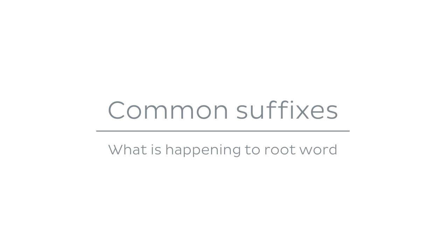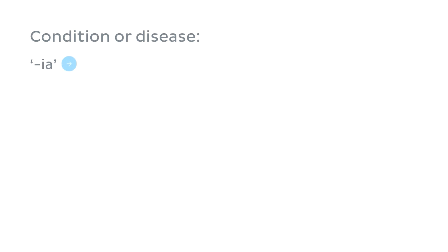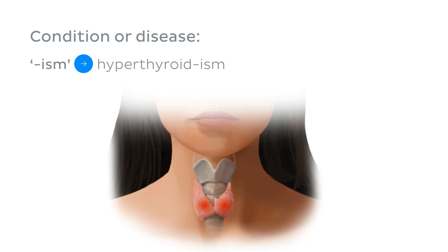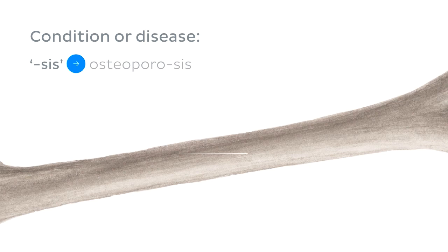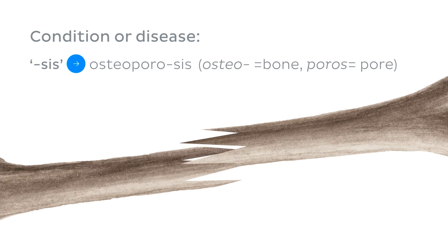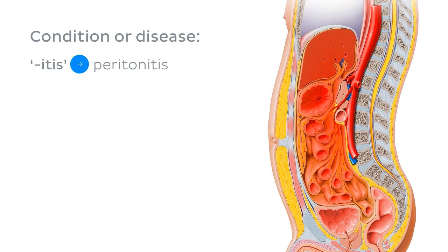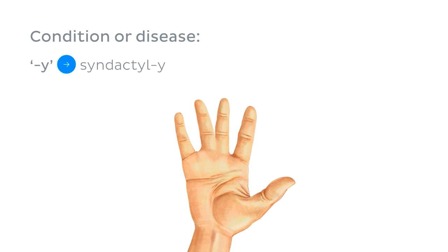One of the most common types of suffixes are those which refer to a medical condition or disease: terms ending with '-ia' such as pneumonia, meaning inflammation of the lungs; '-ism' as in hyperthyroidism, an overactive thyroid; '-sis' like osteoporosis, a condition resulting in reduced bone density — osteo meaning bone and porous meaning poor; '-itis' like peritonitis, inflammation of the peritoneum; or even just '-y' as in syndactyly, the union of two or more digits — syn meaning united, dactylus meaning digit.